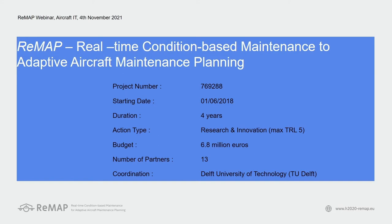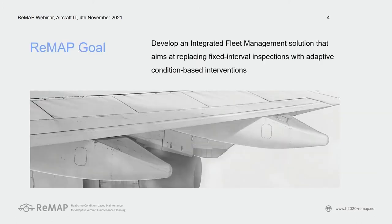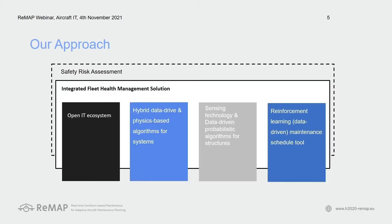The project has 13 partners involved and a budget of 6.8 million euros, coordinated by Delft University of Technology. We are currently in the last year of the project. The main goal of Remap is to develop an integrated fleet management solution that aims at replacing fixed interval inspections with adaptive condition-based interventions. To achieve this goal, we have four main technology development blocks within the Remap project. The first is the open IT ecosystem, which relies on the IT platform we're going to demonstrate in a few minutes.